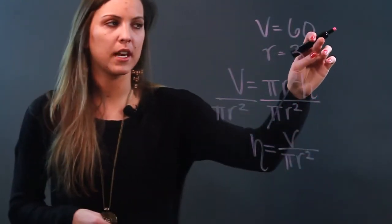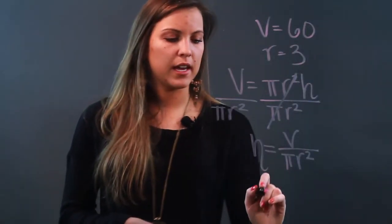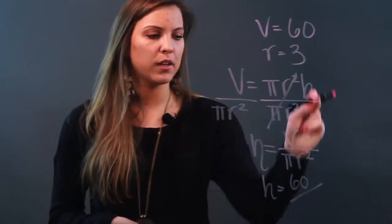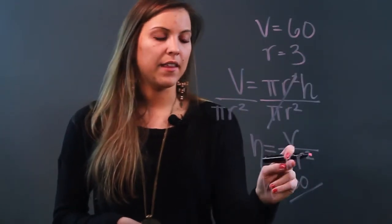Now if these are the dimensions that I'm given, I'm going to substitute these in. So I would get h equals 60 over my radius, which was 3, so 3 squared is 9, and I would have 9 pi.